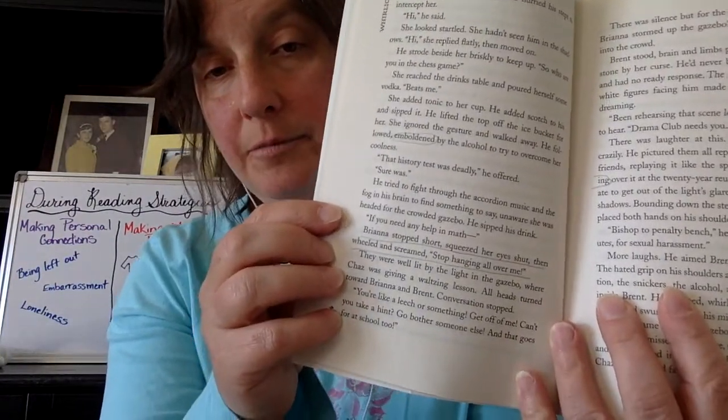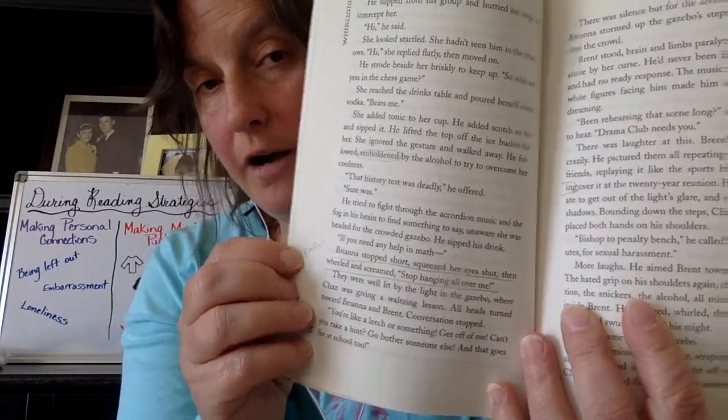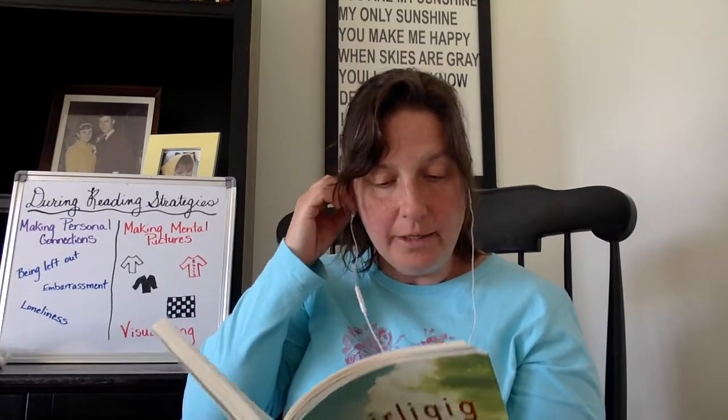I'm going to pause and underline that because clearly that's a conflict. I'm sure Brent is experiencing some embarrassment since she just screamed in front of everybody at the party. So on page 14, just lightly underline "Brianna stopped short" — and note "conflict" so when we refer back to it, it's easier. They were well lit by the light in the gazebo where Chaz was giving a waltzing lesson. All heads turned toward Brianna and Brent. Conversation stopped. "You're like a leech or something. Get off me. Can't you take a hint? Go bother someone else. And that goes for at school, too."